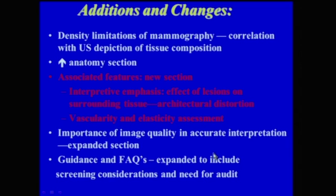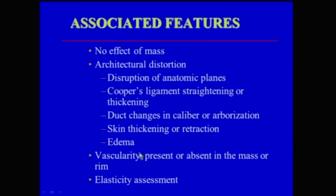A new section on associated features has been added, covering the effect of lesions on surrounding tissue. It includes architectural distortion, skin thickening, pulling of the nipple, vascularity, and elasticity assessment. Architectural distortion can be seen as disruption of anatomic planes, Cooper's ligament straightening or thickening, duct changes in caliber and arborization, skin thickening or retraction, or edema. For vascularity: is it present or absent? Is it in the mass or outside of it? And there is also evaluation of elasticity.